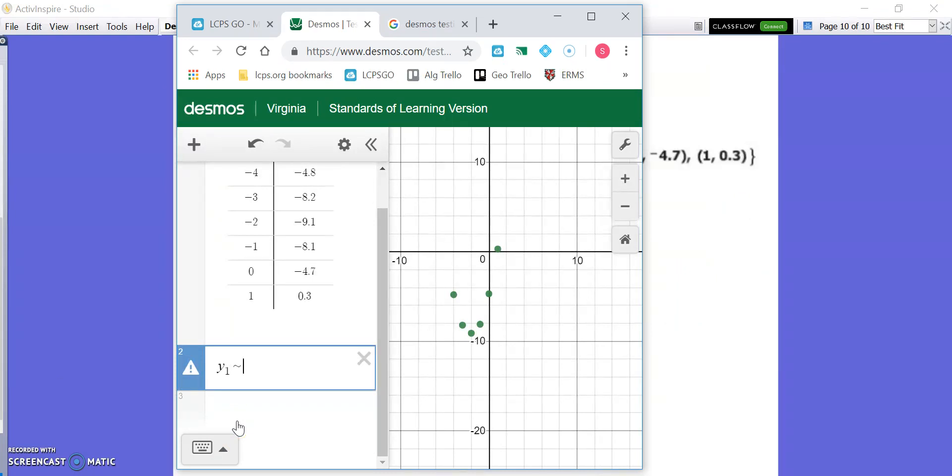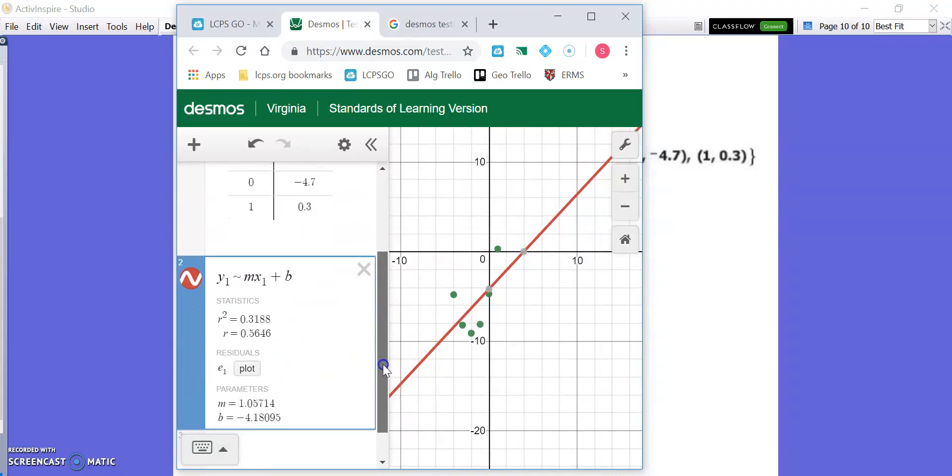Then you're going to type m, because linear is y equals mx plus b, slope intercept form. So x, but we got to make it x sub 1, and then plus b. In case you forgot, y equals mx plus b is slope intercept form. M represents the slope, x and y are your ordered pair or variables, and b is a constant that represents your y-intercept, where you cross the y-axis.